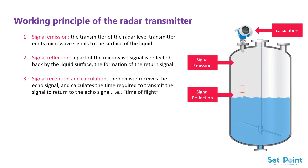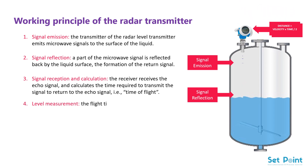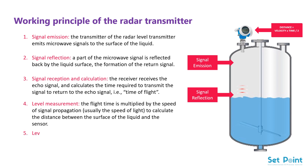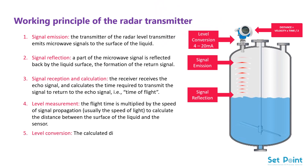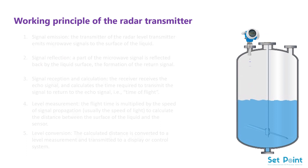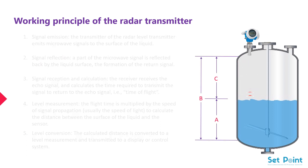Time of flight. Level measurement: the flight time is multiplied by the speed of signal propagation, usually the speed of light, to calculate the distance between the surface of the liquid and the sensor. Level conversion: the calculated distance is converted to a level measurement and transmitted to a display or control system. Here we can see that the time of flight is used to calculate the distance.